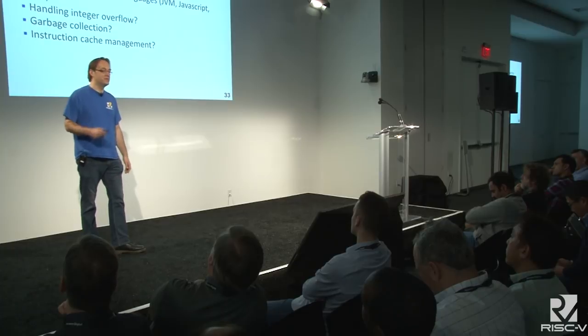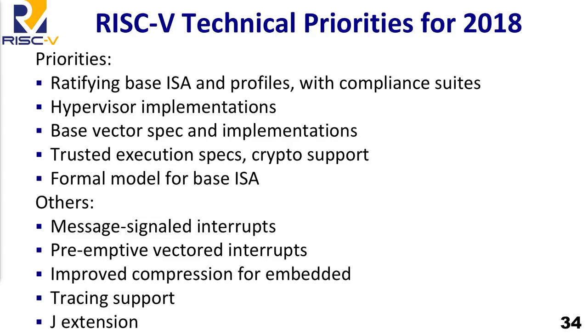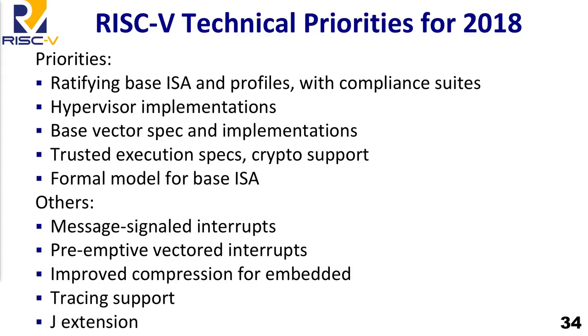Technical priorities for 2018: ratifying the base ISA is number one; getting the profiles and compliance suites done; implementing the hypervisor to try out the spec; getting a base vector spec and some implementations up to evaluate it. The goal is to implement things before we freeze them. Work on trusted execution environments; get some specs and implementations on crypto support; get the formal model done at least for the base ISA. The formal group has agreed on standard notation for expressing the formal model — previously there were lots of formal models in different languages, now they'll work together on a single format. Other activities include interrupt support improvements, better compression, tracing, and the J extension.